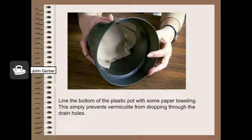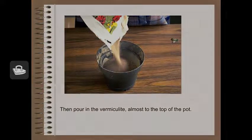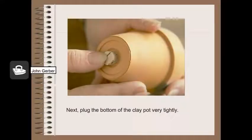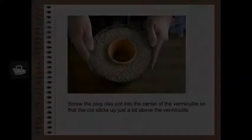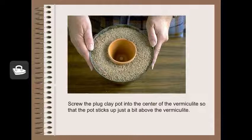Begin by putting the paper towel at the bottom of the plastic pot — if you don't do this, the vermiculite will wash out the hole in the bottom. Next, pour the vermiculite into the pot, almost to the top. You can also use clean sterile sand if you'd like. Next, plug the bottom of the clay pot — it needs to be clay because water will move through the clay. Then push the clay pot into the center of the vermiculite, making sure it sticks out just a little bit above the vermiculite.